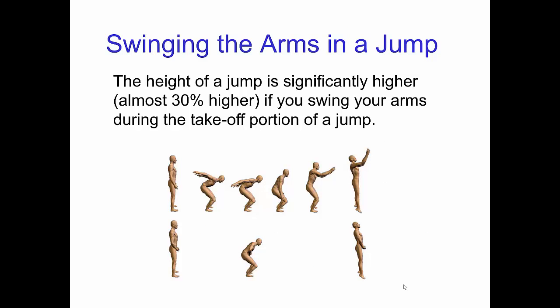A good example of an active secondary motion that supports the primary motion is swinging the arms in a jump. It turns out that you jump significantly higher if you swing your arms as you're taking off.